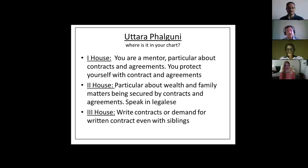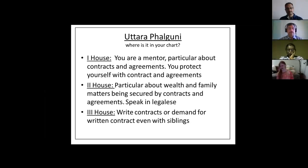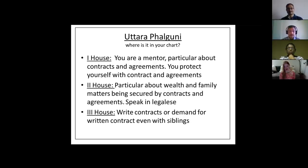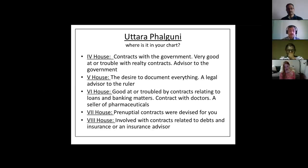Depending on where Uttara Falguni is placed in your chart, you will get different results. In the first house: you are a mentor, very particular about contracts and agreements. In the second house: you secure your family and wealth with contracts and speak in legalese. In the third house: you demand contracts even when dealing with siblings and neighbors. In the fourth house: you do real estate or government contracts and could be an advisor to the government — good or bad depending on planetary dignity.